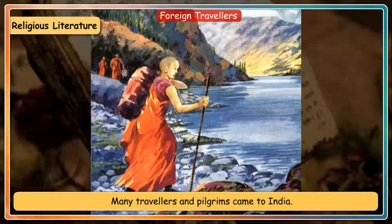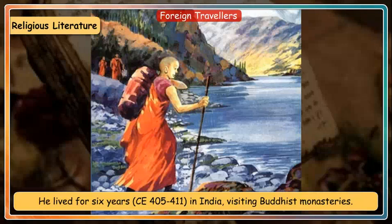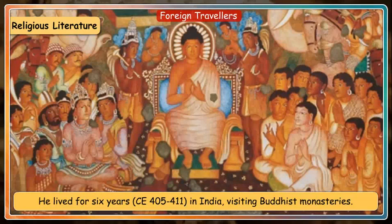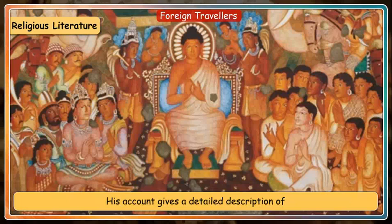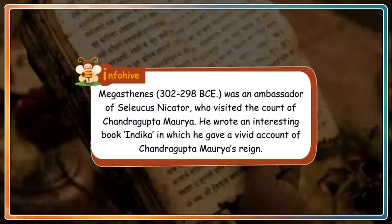Many travellers and pilgrims came to India. Faxian came during the reign of Chandragupta II and lived for 6 years (CE 405–411) in India, visiting Buddhist monasteries. His account gives a detailed description of the life of people under the Gupta kings. Megasthenes (302–298 BCE) was an ambassador who visited the court of Chandragupta Maurya and wrote the book Indica, giving a vivid account of Chandragupta Maurya's reign.